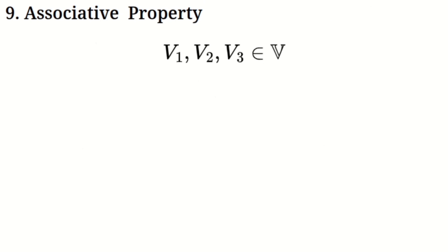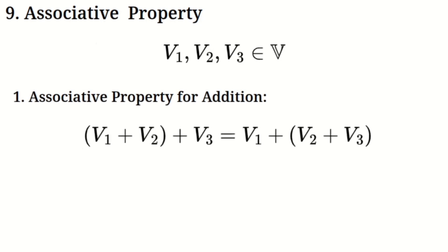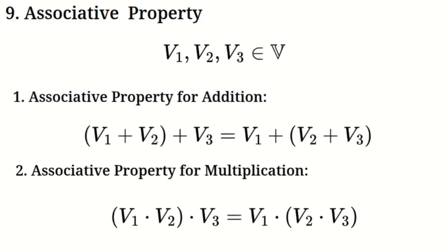Associative property. Let's now look at the associative property, which applies to both addition and multiplication in the virtual number system. For addition, let's say we have three virtual numbers V1, V2, and V3. The associative property tells us that no matter how we group them when adding, the result will be the same — we can first add V1 and V2 and then add V3, or first add V2 and V3 and then add V1. For multiplication, the associative property tells us that the way we group three virtual numbers when multiplying doesn't affect the result, so whether we multiply V1 by V2 first then by V3, or V2 by V3 first then by V1, the final result will be the same.